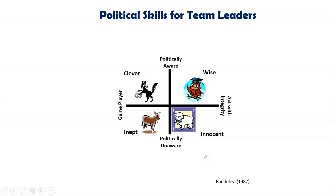The last box — and where I'd strongly recommend you be — is people who are wise. We might call them owls. These are people who are politically aware and act with integrity. That's the place to be: what you say is what you mean, but you're also acutely aware that you're working in a political environment. It is possible to be politically aware and act with integrity. The further up you go in your organisation, the more difficult that becomes because decisions are shades of grey, putting you in difficult positions.